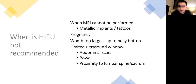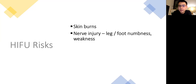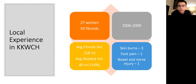HIFU is also contraindicated where there is no safe ultrasound window for the beam to reach the fibroid — for example, in extensive abdominal scarring from previous surgery, bowel positioned between the uterus and the ultrasound beam, or proximity of the fibroid to the spine or sacrum, as there are important nerves in that area. HIFU is not without its risks, namely superficial skin burns, nerve injury leading to leg and foot numbness or weakness, bowel injury which can cause perforation, fibroid recurrence, and on rare occasion a delayed diagnosis of cancer within the fibroid.